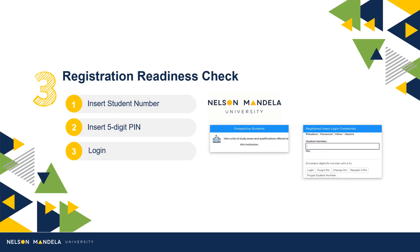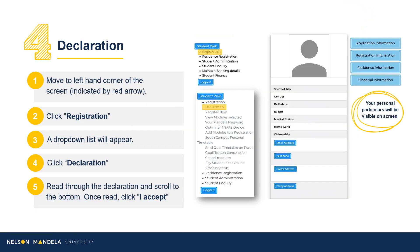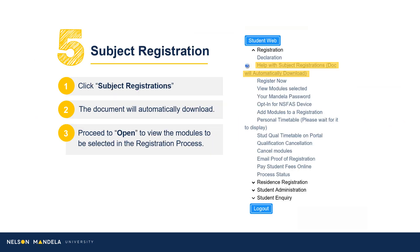Step 3: Make use of your student number and the five-digit PIN to access the registration portal. Step 4: On the right-hand side of your screen, your personal particulars will reflect, and on the left, the steps to registering for your first year. Navigate to registration on the drop-down panel, proceed to scroll, clicking Declaration. Once read, click I Accept.